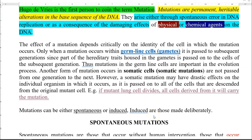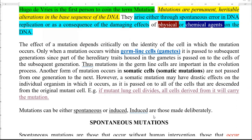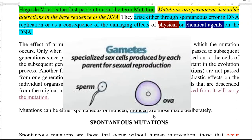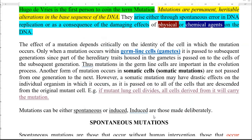The next point is related to the effect of mutations on cells. It depends upon what type of cell the mutation occurs in. When mutation occurs in germline cells — that is gametes, which includes sperm cells and ova cells — it is passed on to subsequent generations, since they serve as part of the hereditary traits housed inside the gametes. Thus the mutation caused in one generation may be passed on to the next generation.